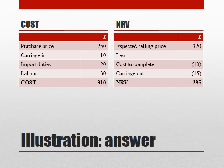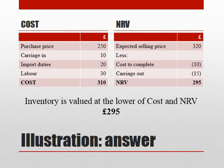We then compare the cost and the net realizable value, and we will value the stock or the inventory at the lower of those two amounts, which is £295. And we do that for each individual line of stock. So we might end up in a situation where at the year end, when we're looking at the value of our inventory, some inventory will be valued at cost, and there might be a small number of items that are valued at net realizable value.